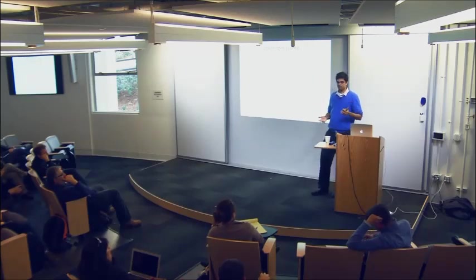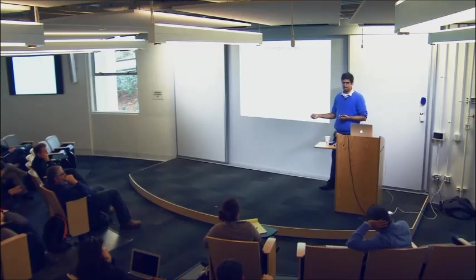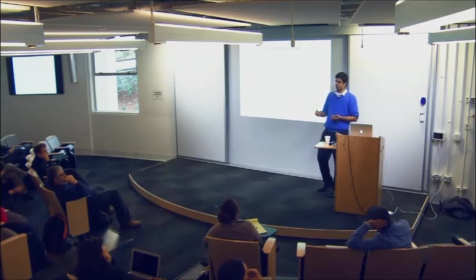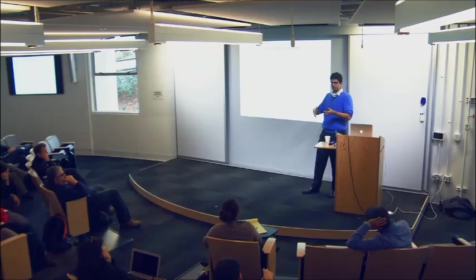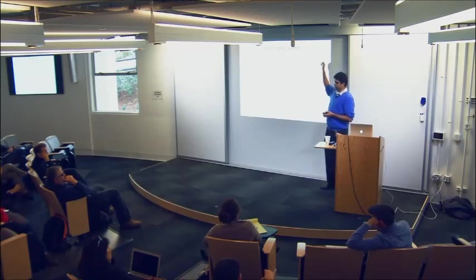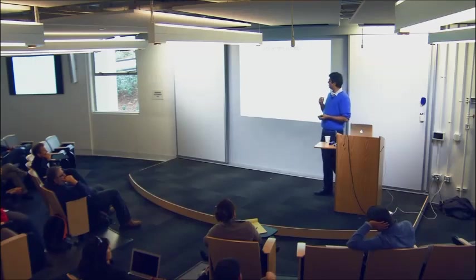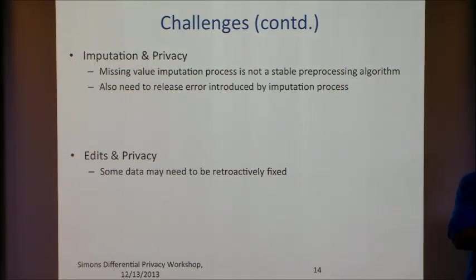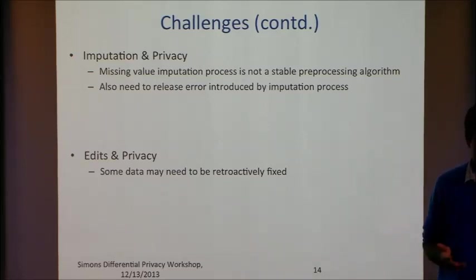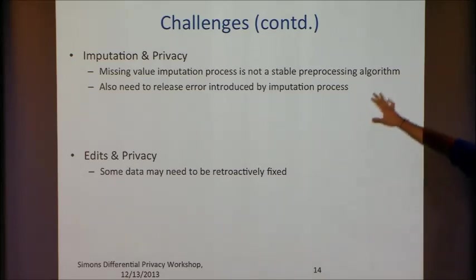The typical way to solve this is imputation — specifically multiple imputation, where you build a model for any column in your dataset and for any missing value, you impute not one but many samples, giving you K datasets where observed values are the same but missing variables are different draws from a distribution. This is a preprocessing step — it's not stable, since it depends on the entire dataset. You could think of each imputed dataset as real and apportion your epsilon, but that seems wasteful since observed data is the same across all of them and differing values are just random draws.